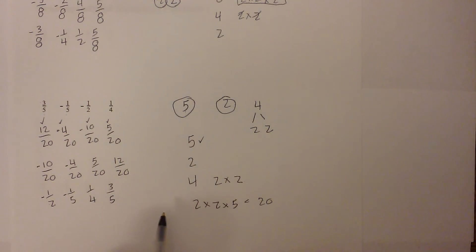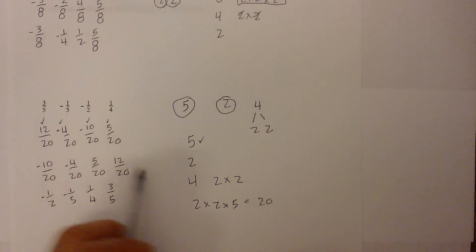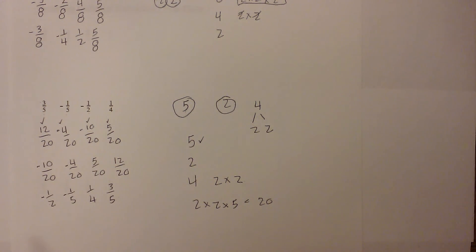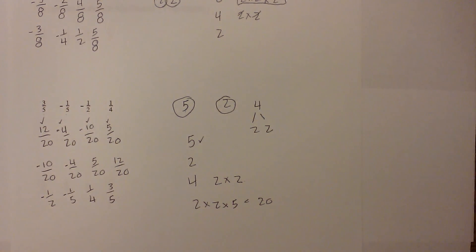So from least to greatest we have: negative one half, negative one fifth, one fourth, and three fifths. We found a common denominator using a factor tree and then ranked them from there. I hope that helps in ranking fractions from least to greatest. Thanks for watching — MooMoo Math and Science uploads a new math and science video every day, so please subscribe and share.